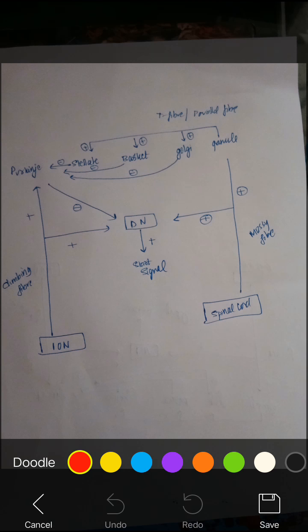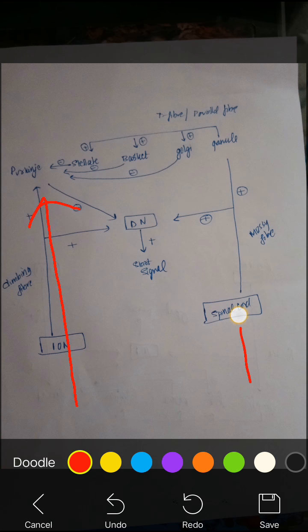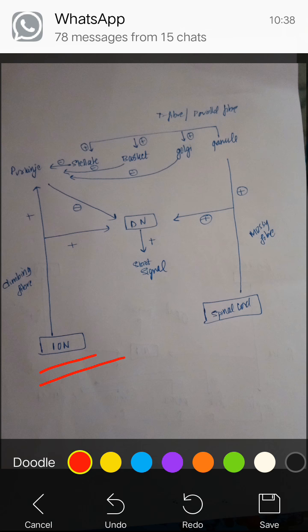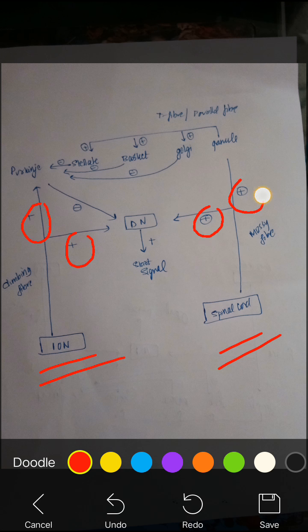Hello friends, Danvin here. Let's quickly get into all the circuits and connections of the cerebellum. Cerebellum has got two inputs: the first input is coming from the inferior olivary nucleus and the second input is coming from the spinal cord. Remember, the inputs are usually excitatory.